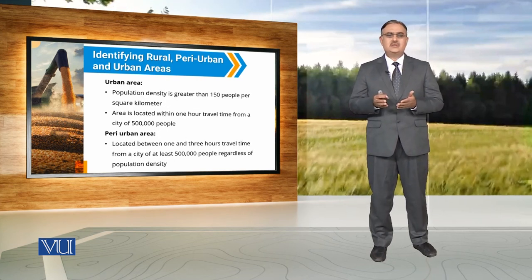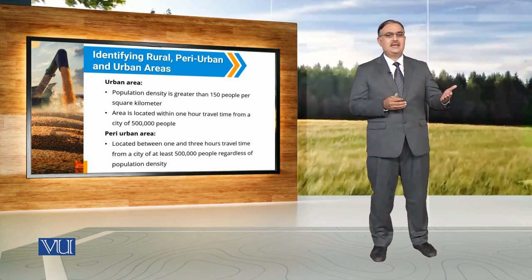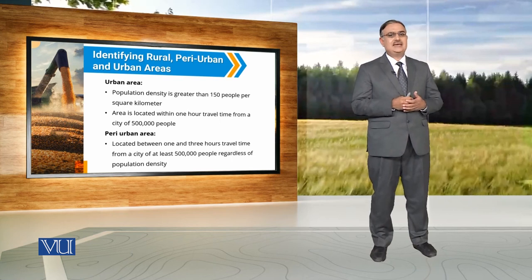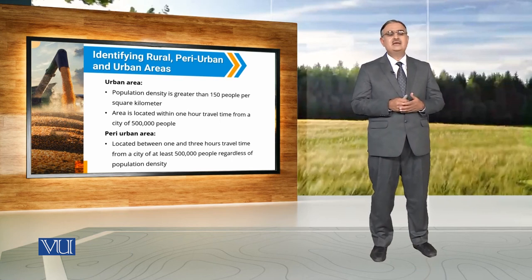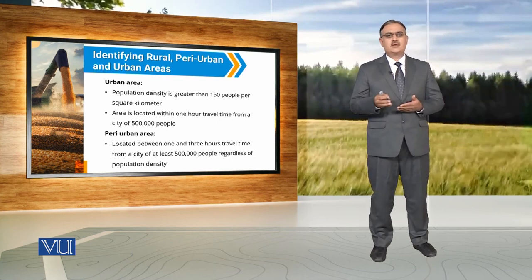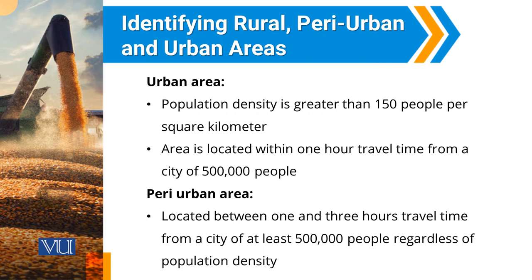According to them, an urban area is an area where population density is greater than 150 people per square kilometer, and this area is located within one hour travel time from a city with a population of 500,000 people.